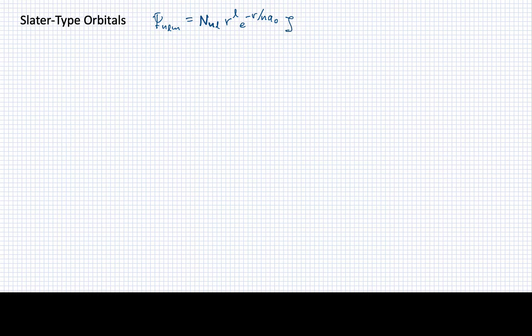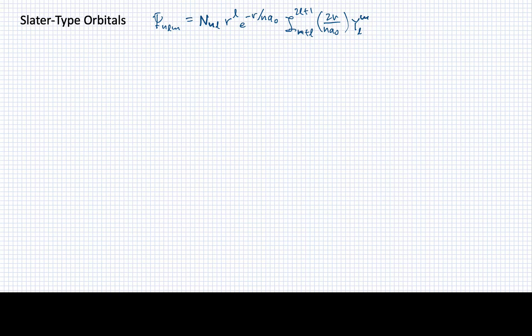and then there was a part dependent upon Laguerre polynomials, which were indexed by n and l, and had as their arguments this function of r — basically 2r over n times a-zero. The angular part of the wave functions for the hydrogen atom were given by the spherical harmonics, which are actually a pretty good set of functions for us to use. The angular part is all in the spherical harmonics.